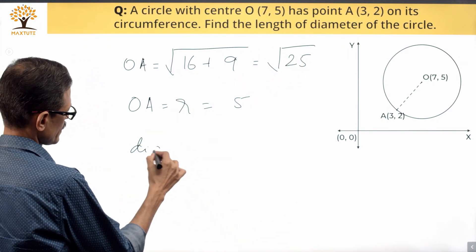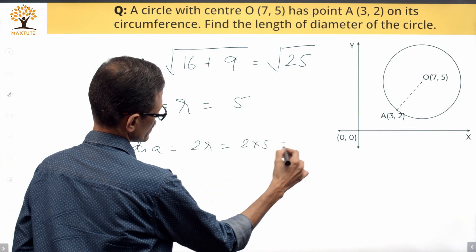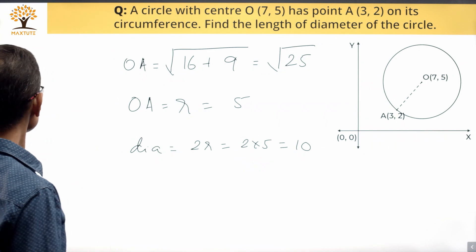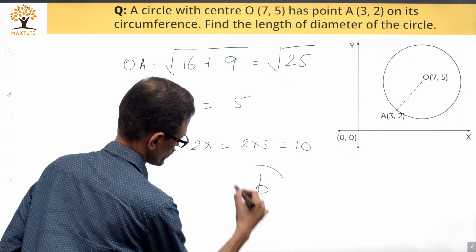What we need to find out is the diameter. Diameter equals 2 times the radius, which is 2 times 5, which equals 10. Answer option B is the correct answer to this question.